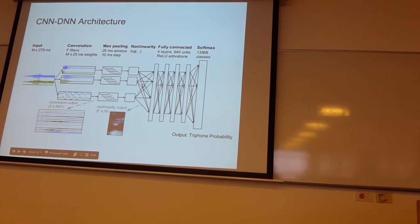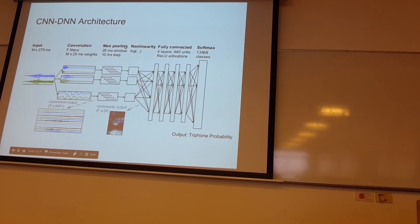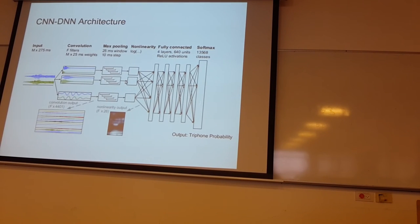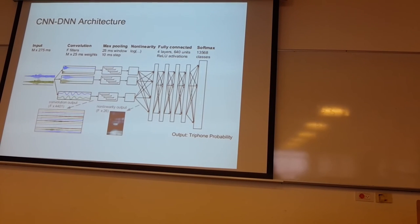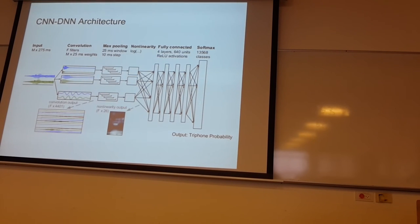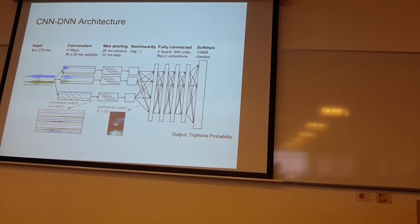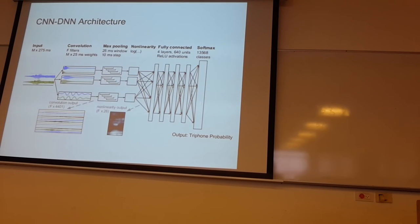The next step is the custom log nonlinearity — all outputs have ReLU activation in between so there are no negative numbers and the log doesn't blow up. Then we have the fully connected classifier: back then the state of the art used four or eight fully connected layers; these days you would use an LSTM. The output is a softmax layer with 14,000 outputs corresponding to the number of triphones. Everything is trained end-to-end. The time delays are implicitly learned in the filters at the beginning.